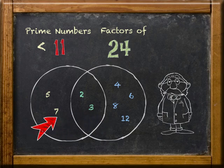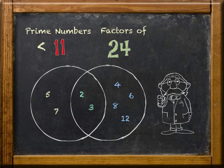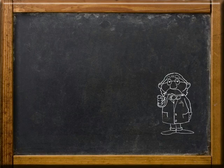And all the numbers in the left circle and the shared intersection are prime numbers less than 11. Those are the correct answers. See you next time.